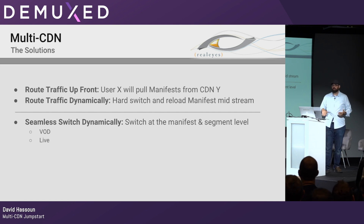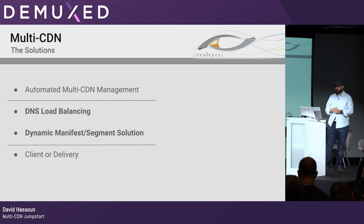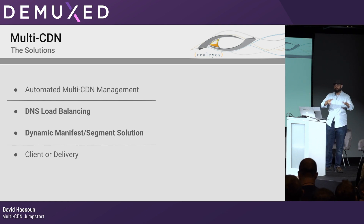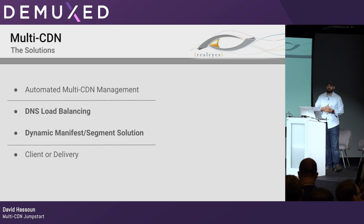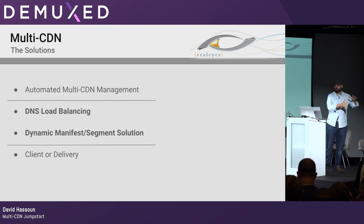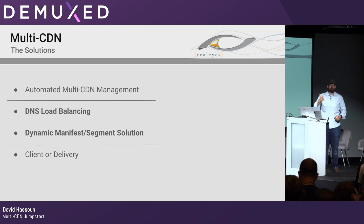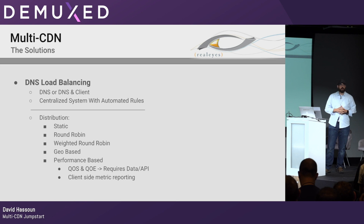Better approaches do this seamlessly — dynamically switching users from CDN 1 to CDN 2, 3, or 4 through an event or session while keeping it very seamless. We can switch at the manifest or segment level, and it doesn't actually have to be a switch on the client. The two main ways to categorize multi-CDN options are DNS load balancing or dynamic manifest/segment solutions, which can be done at the client level in your applications and video players, or at the delivery layer. The decision comes down to how much effort you're willing to put in and what you want to get out of it.